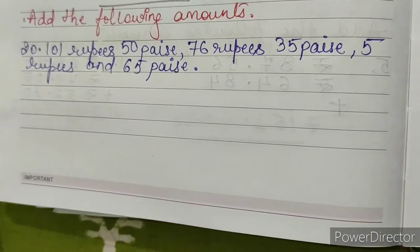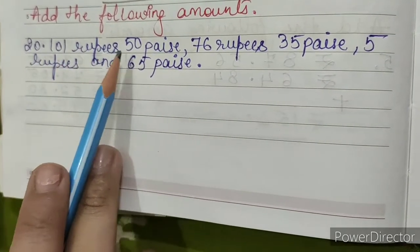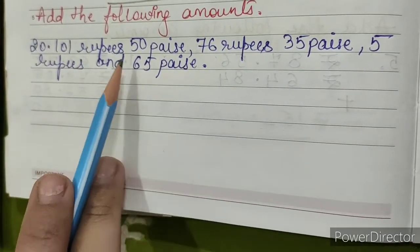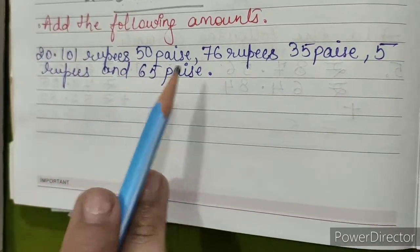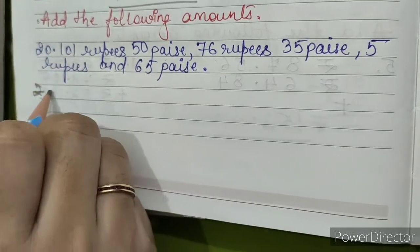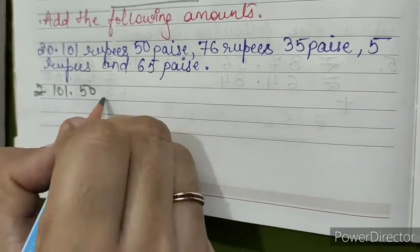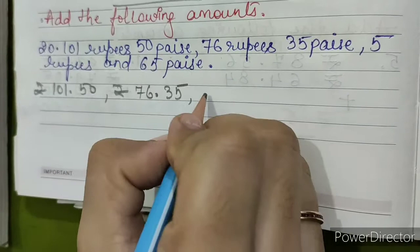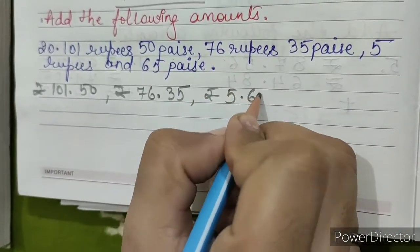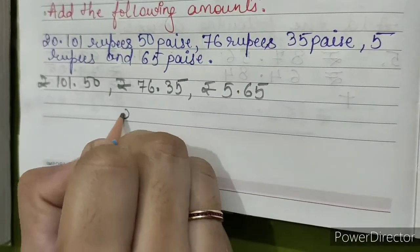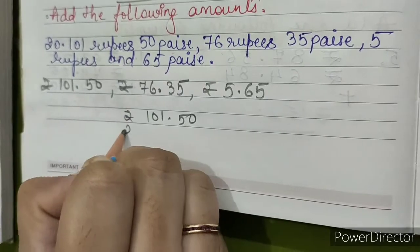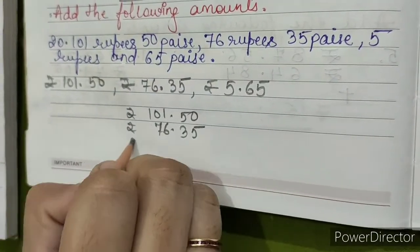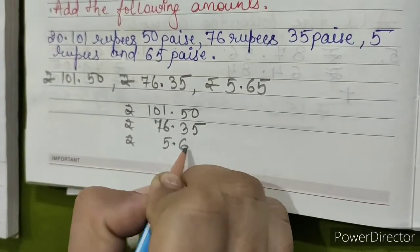Add the following amounts. Question number 20: rupees 101.50, rupees 76.35, rupees 5.65. First of all we'll arrange it: rupees 101.50, rupees 76.35, rupees 5.65. Now first is rupees 101.50, second rupees 76.35, rupees 5.65.